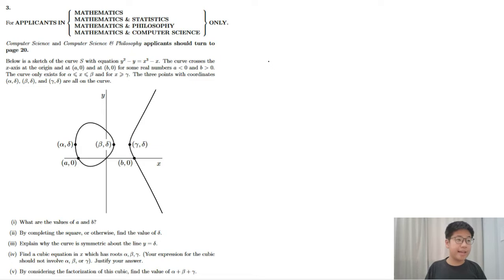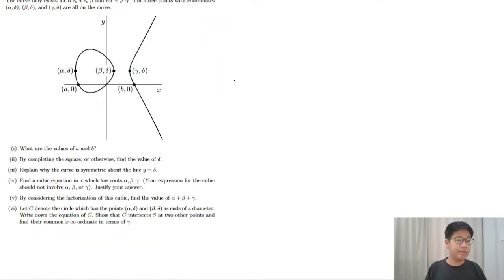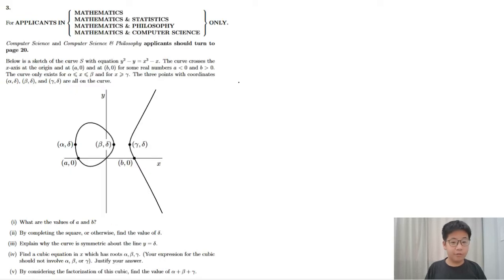The three points with coordinates alpha delta, beta gamma, and gamma delta are all on the curve. What are the values of a and b?